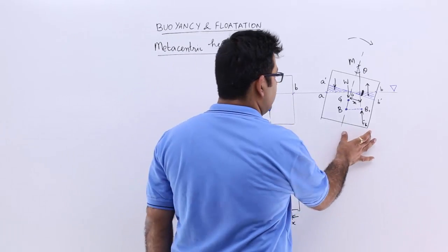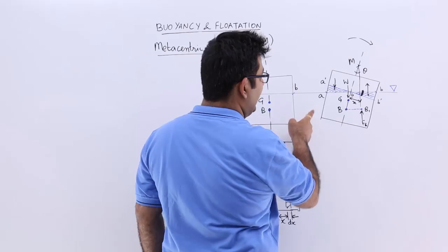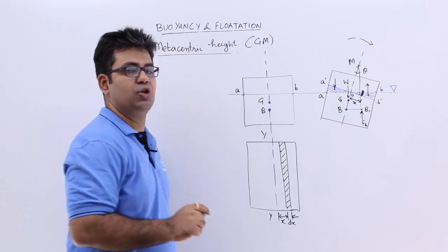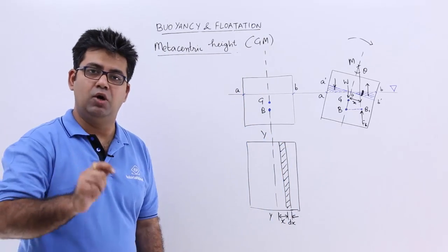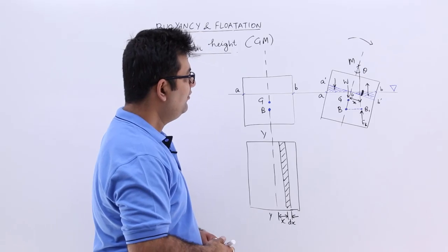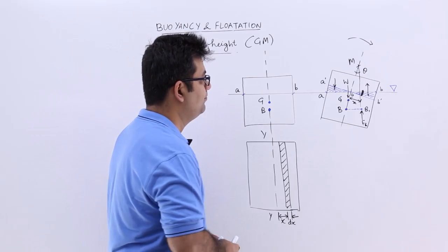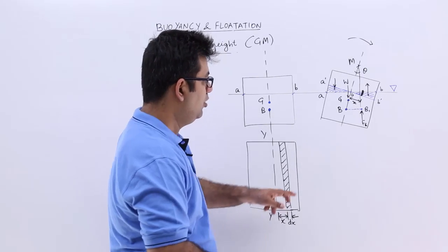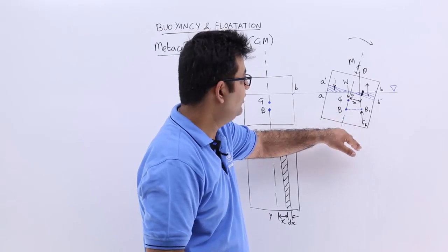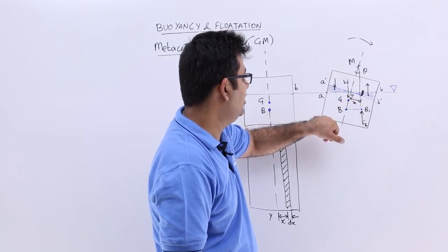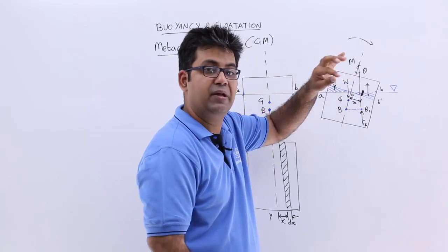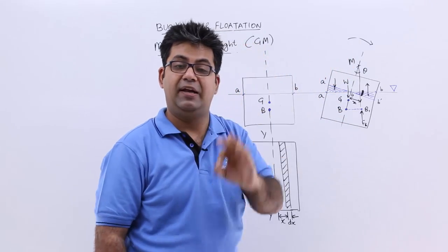This can now be justified. AOA' is the loss in buoyancy on the left hand side. We draw a line perpendicular to BB', and it intersects the original axis at M, so that becomes your metacentre.